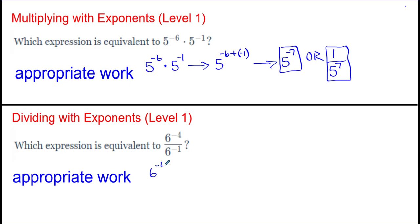Dividing with exponents: start with the original problem. I've got six to the power of negative four divided by six to the power of negative one. Always start by writing the original problem, and when dealing with division you subtract the exponents. Writing the numerator first — six to the power of negative four — I subtract, and whatever the bottom exponent is, that's what you subtract. In this case I end up with negative four subtract negative one.